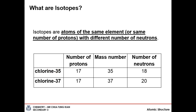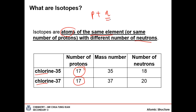The next term we'll introduce is isotopes. Isotopes are atoms of the same element but with different numbers of neutrons. The periodic table is arranged by proton number, and every element has a unique proton number. For example, chlorine always has a proton number of 17 — 17 only belongs to chlorine. If you change the proton number, it becomes a totally different element. However, the number of neutrons can change, and atoms with a different number of neutrons but the same number of protons are called isotopes.